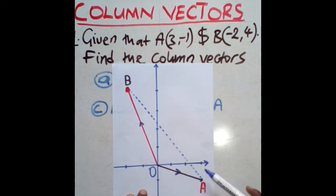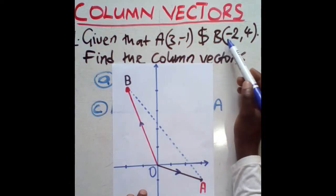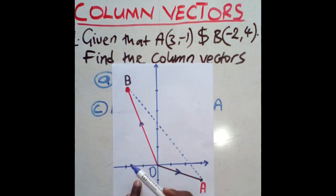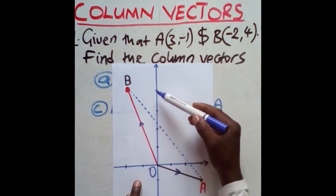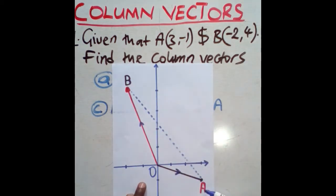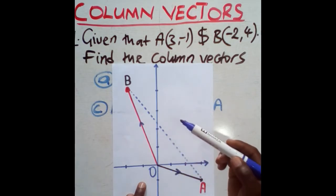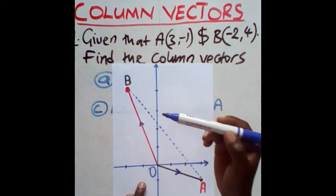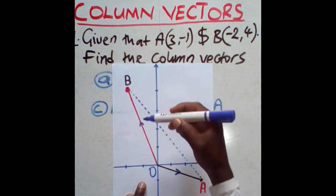We have another coordinate, coordinate B. If this coordinate were to be plotted, you move negative two on the x-axis, then four steps in the positive direction of the y-axis — so they meet at that point. Now what we want to find are the column vectors.